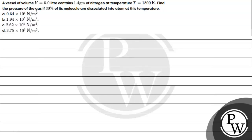Hello, let's read the given question. The question says a vessel of volume V equals 5 liters contains 1.4 grams of nitrogen at temperature T equals 1800 Kelvin. We need to find the pressure of the gas if 30% of its molecules are dissociated into atoms at this temperature.